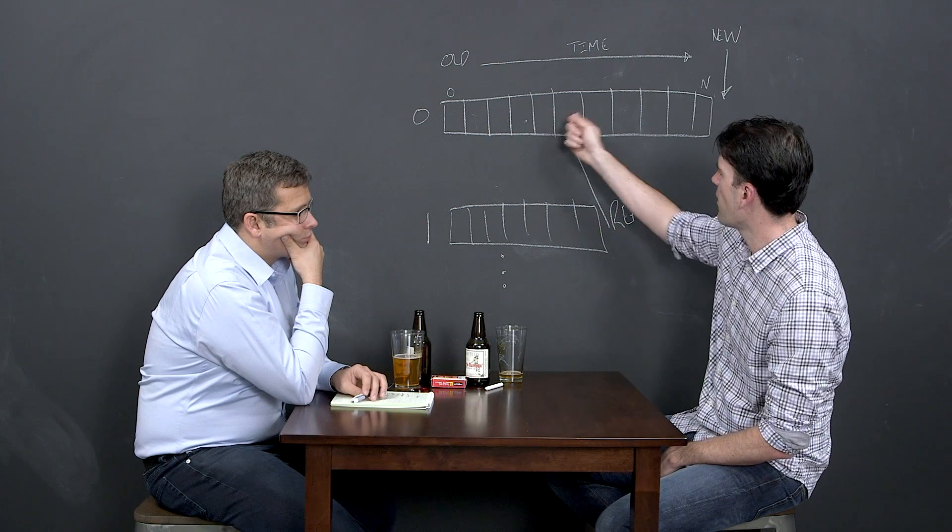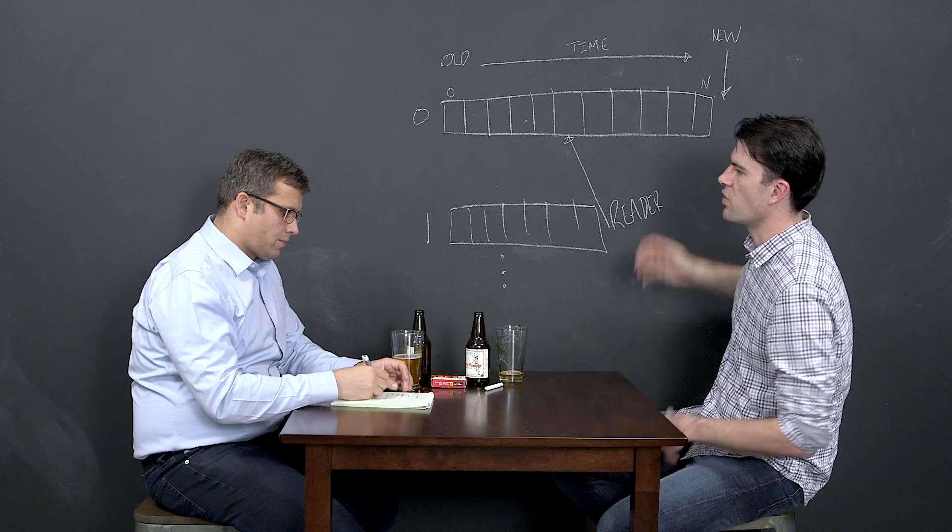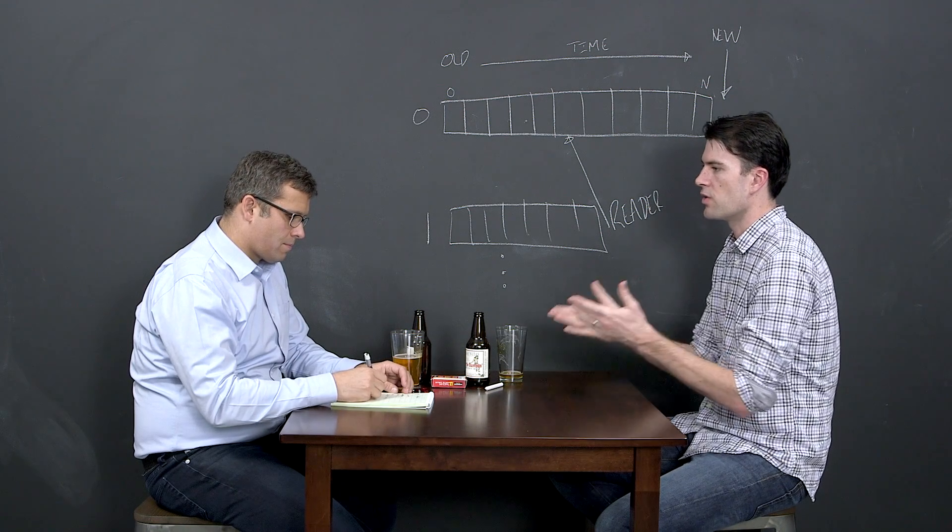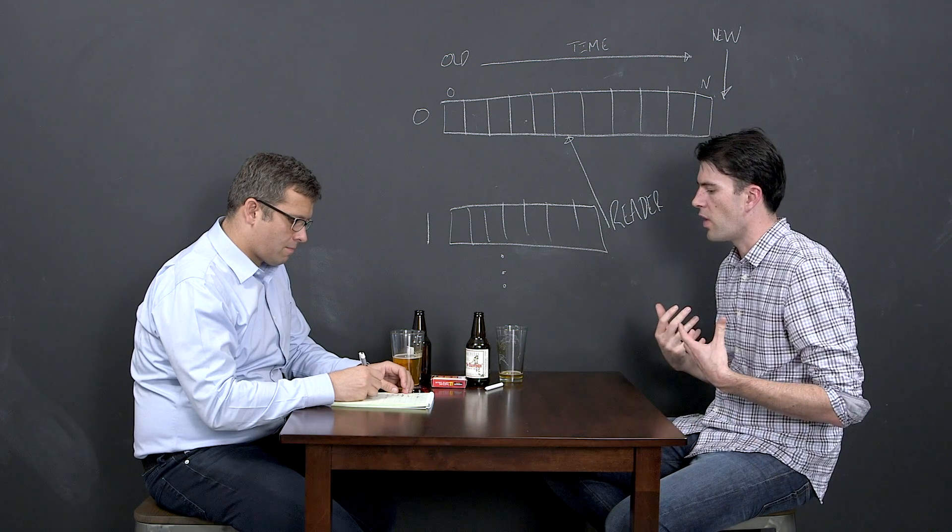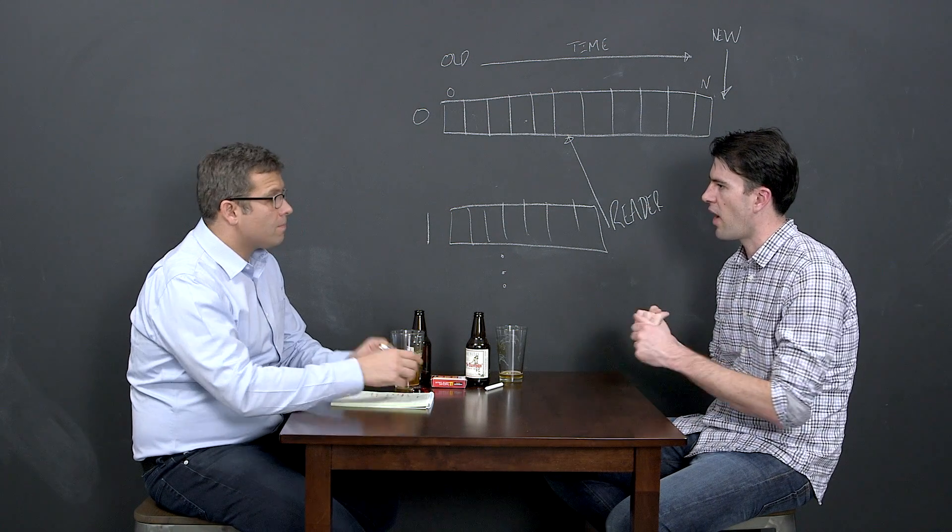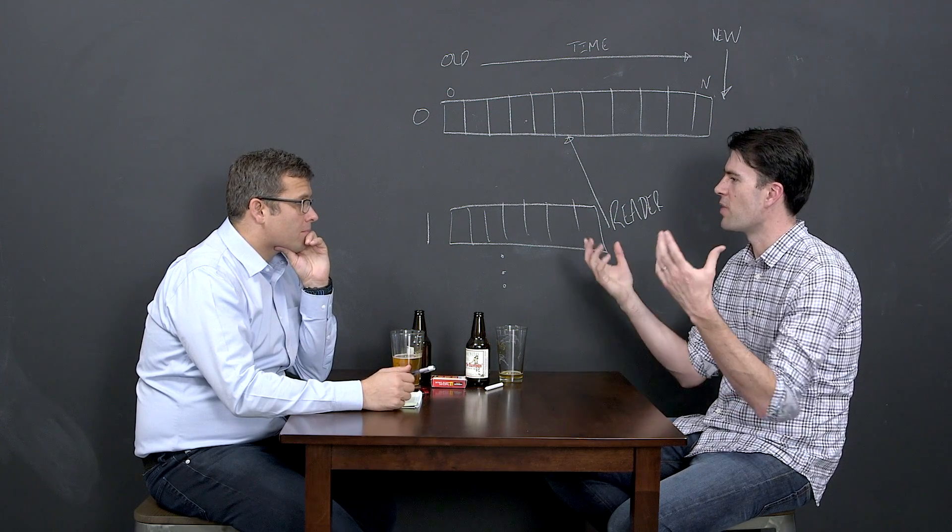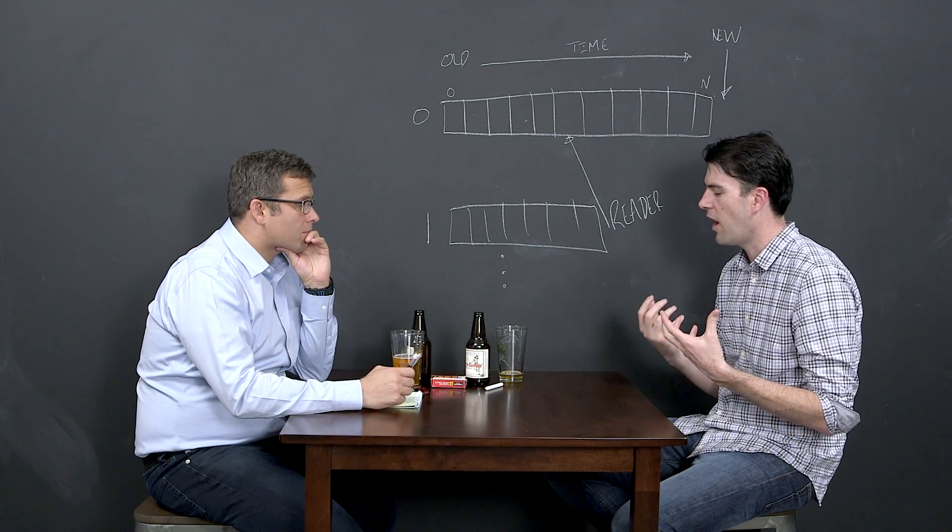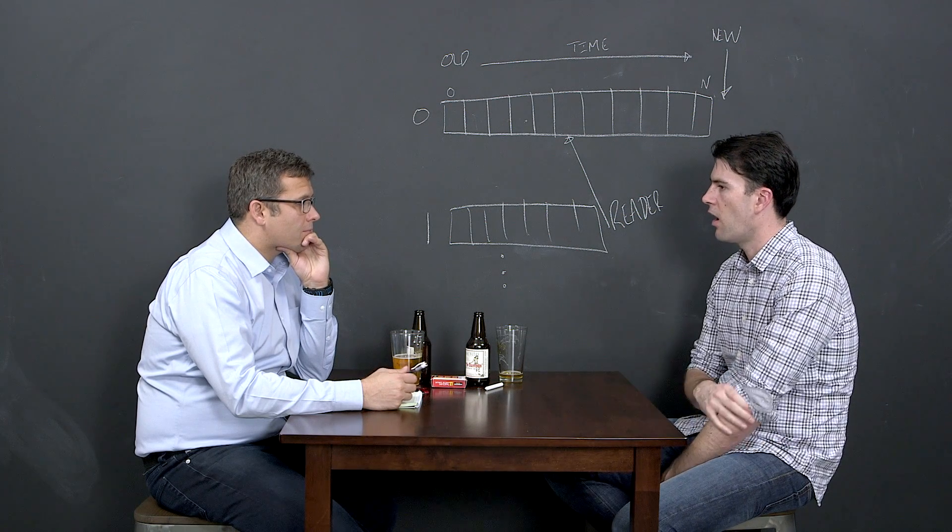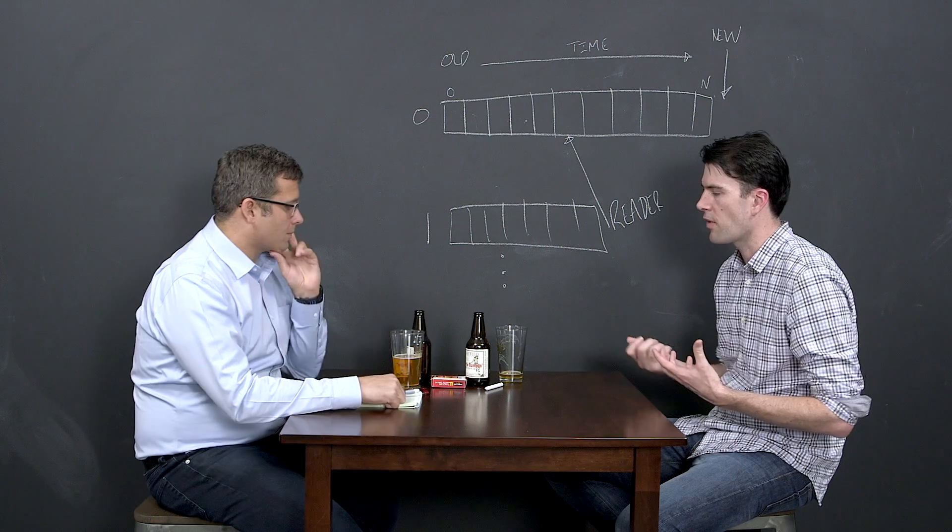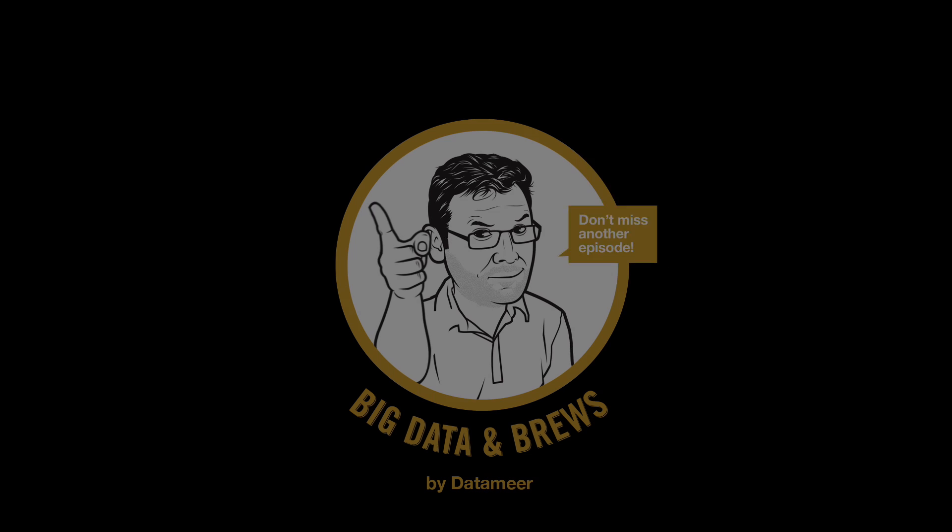And so what you have here is no longer these kind of immutable events, but rather my user record is currently this, my user record is currently this. And that's exactly what you need to be able to do any kind of stateful computation. So aggregates, joins, anything that has scope beyond a single message. And that's obviously most of the interesting stuff in stream processing. And so we built that into Kafka intentionally with the idea of supporting that. And it's there for anybody who wants to use it.